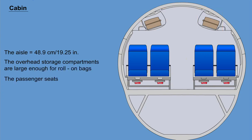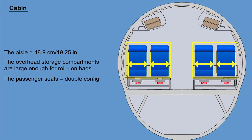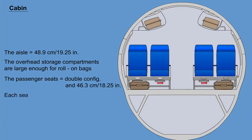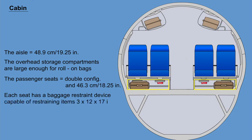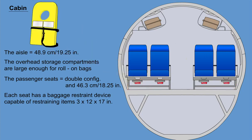The passenger seats are left-hand and right-hand double configuration and are 46.3 cm, 18.25 inches wide. Each seat has a baggage restraint device capable of restraining items 3 by 12 by 17 inches and weighing 10 kg, a life jacket stowage area under the seat, and a seat belt.